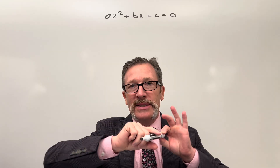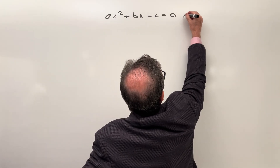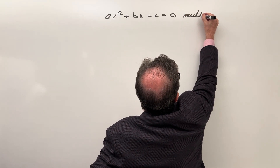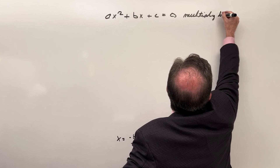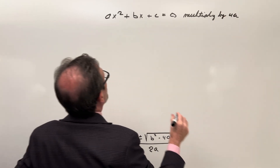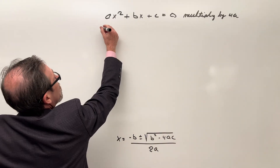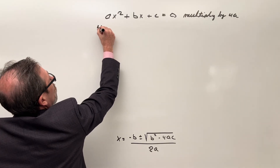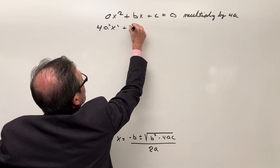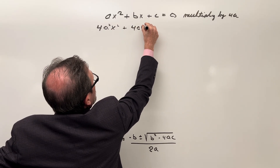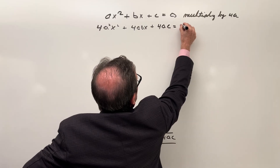So let's give them the first hint: multiply both sides by 4a. If I put a 4a on this expression, I'm going to get an a-squared term and then 4abx and so on. So we end up with 4a²x² + 4abx + 4ac = 0.